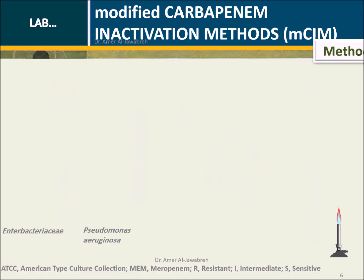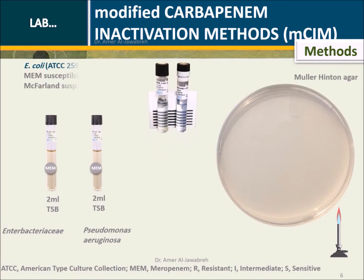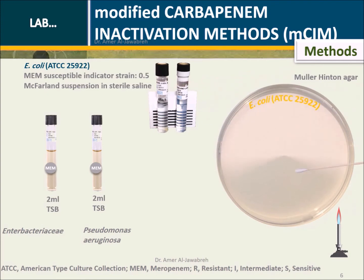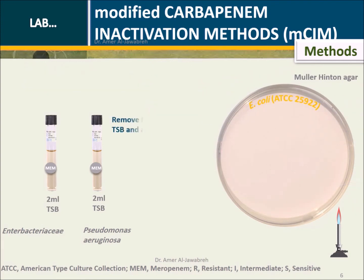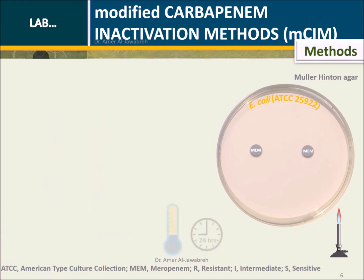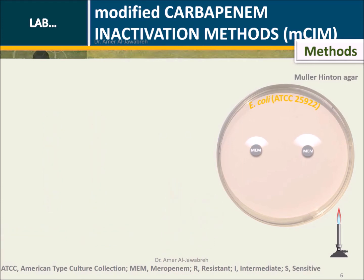Just prior to completion of the incubation period, prepare a 0.5 McFarland suspension from a meropenem-susceptible indicator strain, E. coli ATCC 25922, in sterile saline. Streak Mueller-Hinton Agar with E. coli. Remove meropenem disks from TSB and apply on the Mueller-Hinton Agar plate. Incubate at 35 degrees Celsius for 24 hours.